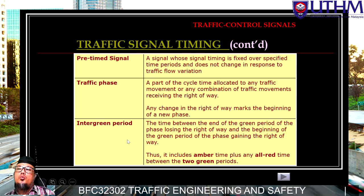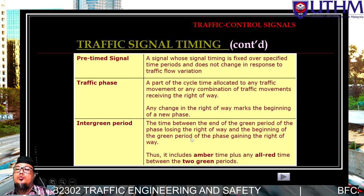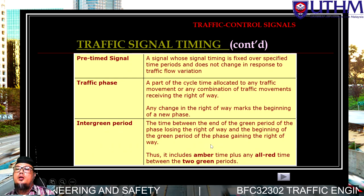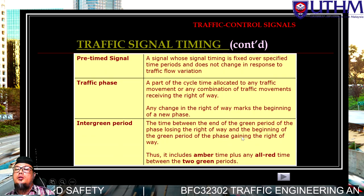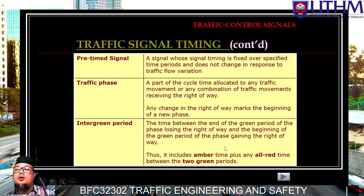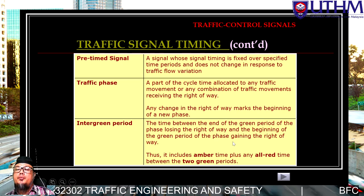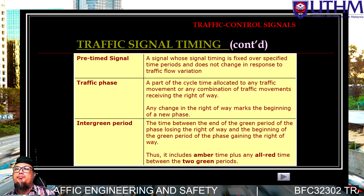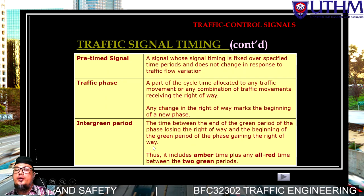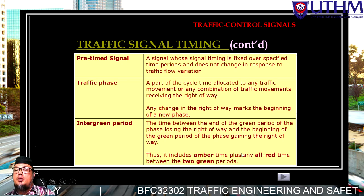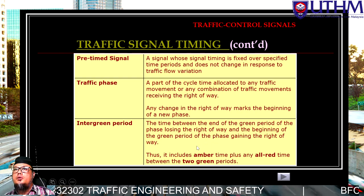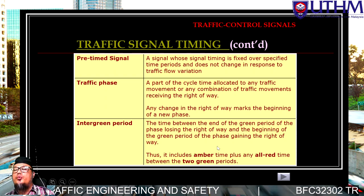Let's imagine this: when green time for one phase ends and changes to red, and green time for the next phase begins — before turning red, there is amber time. After amber ends and before the next green begins, there is one more gap called 'all-red,' during which all approaches must stop. So the intergreen period includes amber time plus all-red time between two consecutive green periods, from one phase to another.